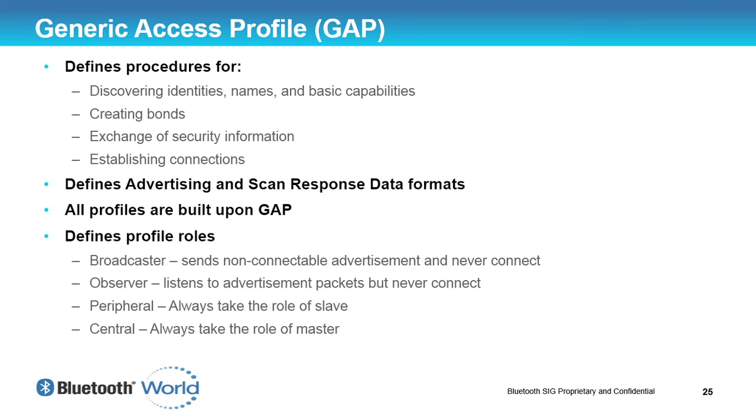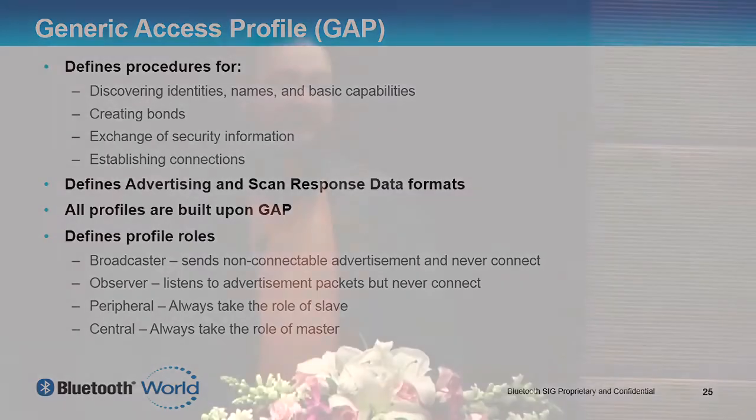The generic access profile also defines the advertising and scan response data formats. We can advertise data, but the other device may be newer than us, and when advertising there's no way to exchange version numbers. So we use something fairly generic called a tag length value field: a tag says what the data type is, a length says how long the data is, and then you have the data. If you don't understand a tag, you look at the length, skip that many bytes, and look at the next tag — making us forward compatible with future versions of the specification.